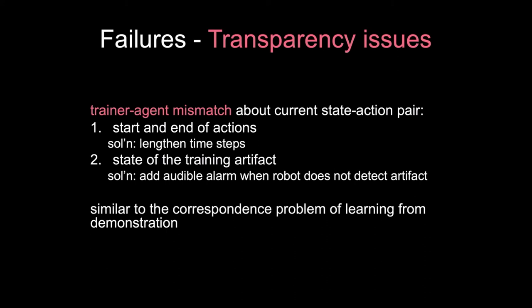The solution, after digging into the actual issue, was to add an audible alarm. Whenever the Vicon system couldn't detect the artifact, there was an alarm, allowing me as a trainer to quickly move the artifact so it could be detected, and possibly turn training off for a moment. These problems are very similar to what are called correspondence problems in imitation learning, where the demonstrator's state and action space can differ from the agent's. For learning from human feedback, the issue is about the trainer's mental model of the current state-action pair.